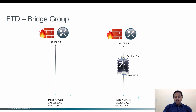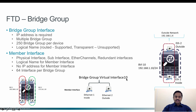Let's look at some characteristics of bridge groups in Firepower Threat Defense. A bridge group is a virtual interface and it needs an IP address. You can have multiple bridge groups within a firewall — the maximum supported bridge groups are 256 per device. You can have a logical name for a bridge group in routed mode, but in transparent firewall mode you cannot have a logical name for the bridge group.